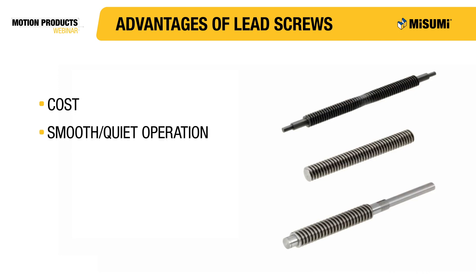Because there are no moving components inside of the nut, lead screws are very smooth and quiet in operation. Many ball screws do not have individually caged balls, resulting in a noticeable amount of noise during use. On the other hand, in most situations when properly installed, lead screws cannot be heard during use.